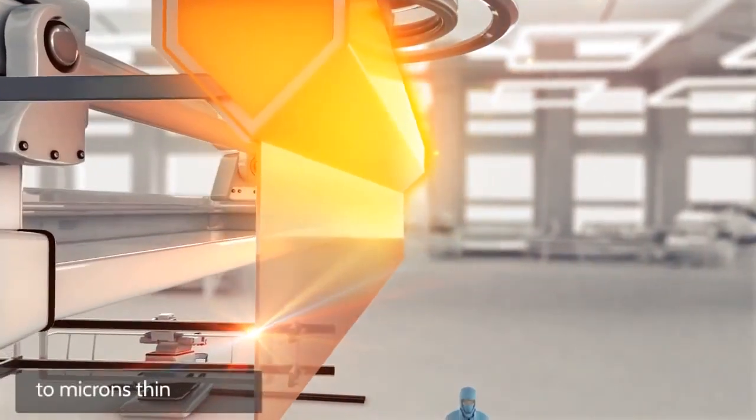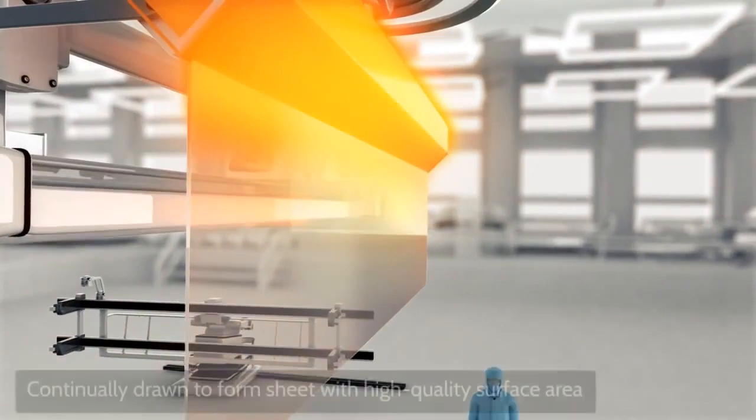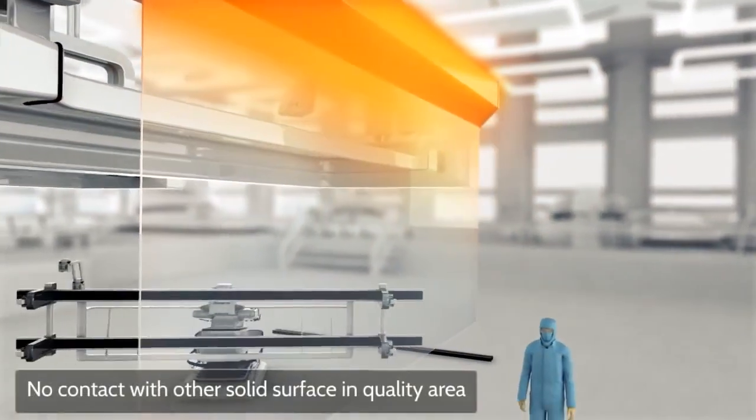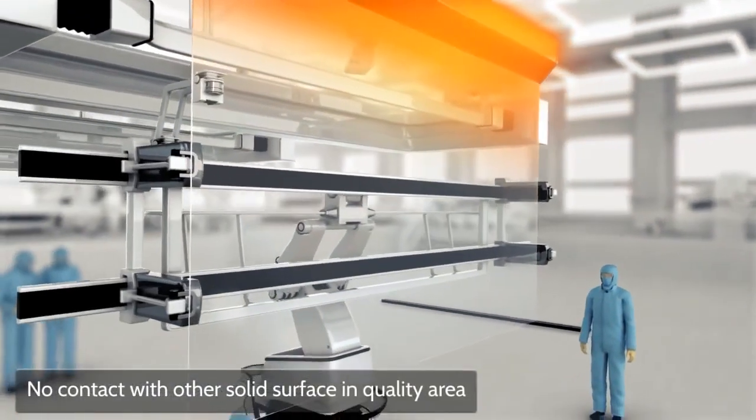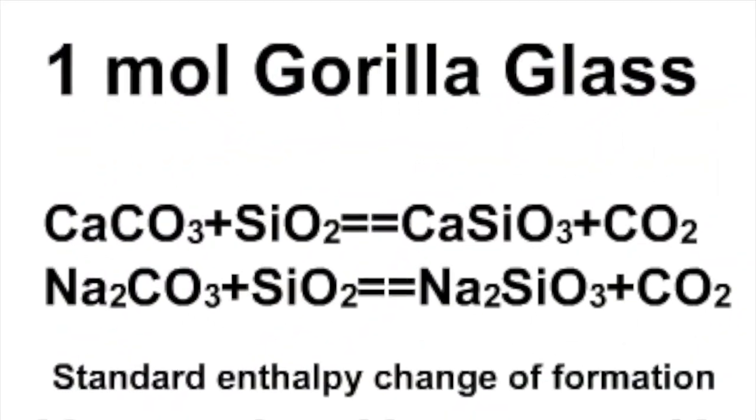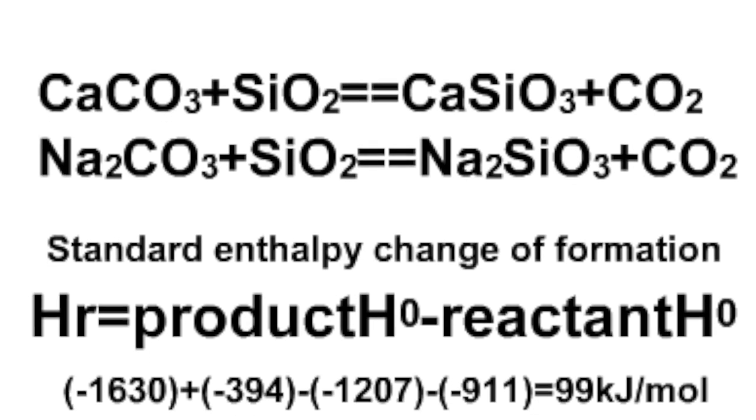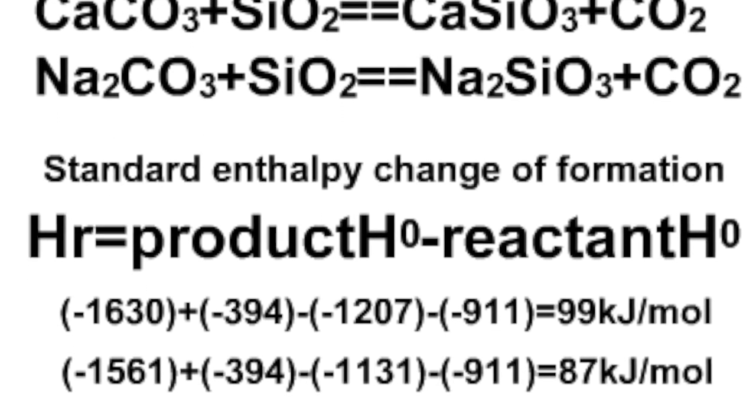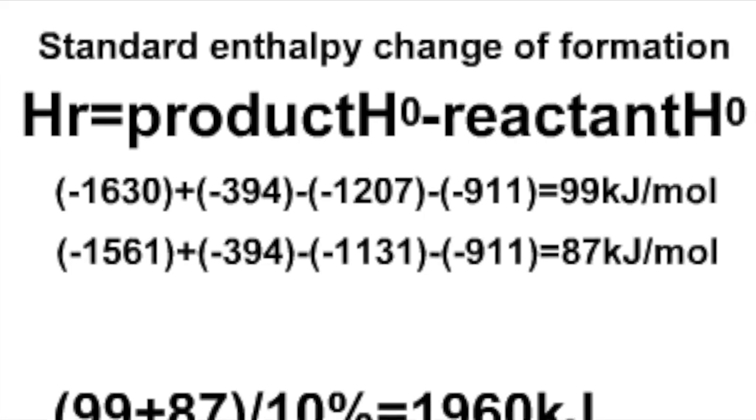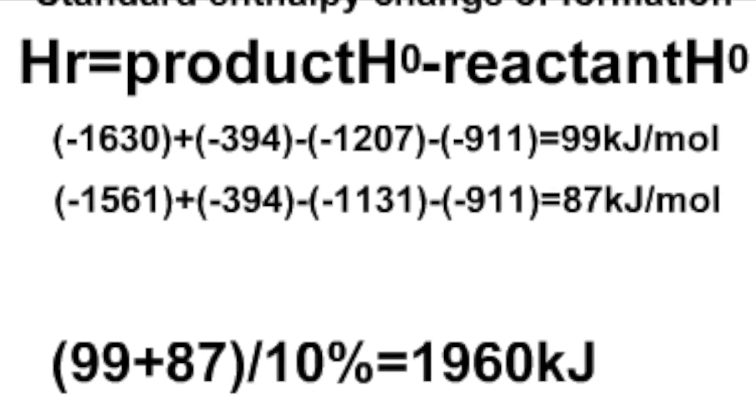After the hardness, let's talk about the energy. To produce one mole of Gorilla Glass, it's a chemical change, and that is the same with normal glass. Here we use the knowledge of standard enthalpy of formation to find the energy contribution for one mole of Gorilla Glass. This 10% is for the efficiency of the machine.